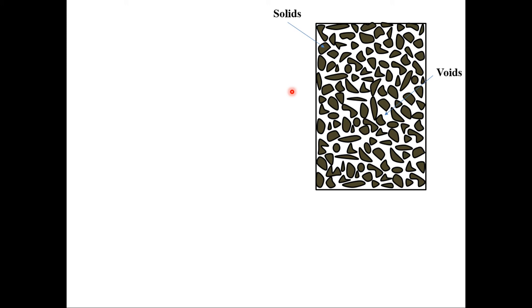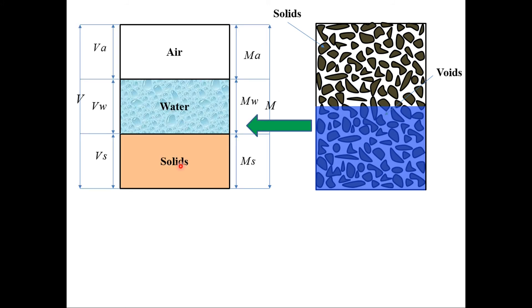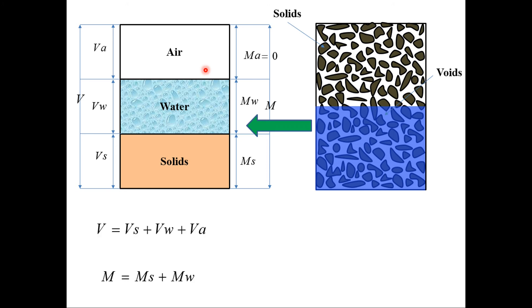For phase relationships in soils, the soil mass is considered to be a three-phase system, made up of soil particles called solids, water, and air. The soil particles, water, and air each have their own volume. The soil particles have their own mass, called mass of solids; mass of water corresponds to pore water; and mass of air is considered negligible and reduced to zero. Hence, total volume equals volume of solids plus volume of water plus volume of air, where volume of water plus volume of air make up the volume of voids, and total mass equals mass of solids plus mass of water.